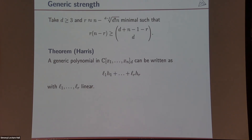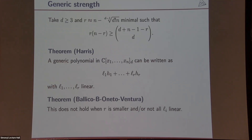What is the strength of a generic polynomial? If you take degree at least three and take r minimal such that the relevant inequality holds, then r is roughly n divided by the (d−1)-th root of d! times n. For this r it is true that any polynomial — and in particular the generic one — can be written as a sum of r products where one factor in each product can be taken to be linear. If you try to reduce r, it no longer works; and if you relax the condition that factors are linear, a generic polynomial cannot be written that way either.